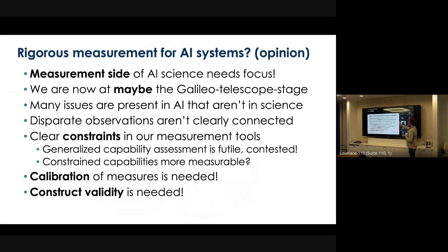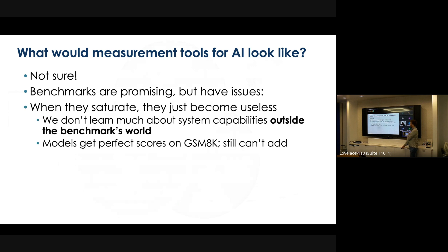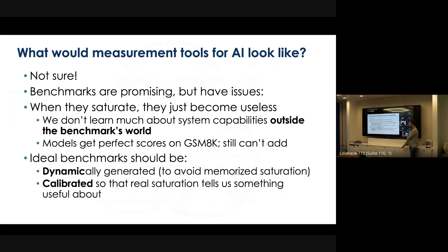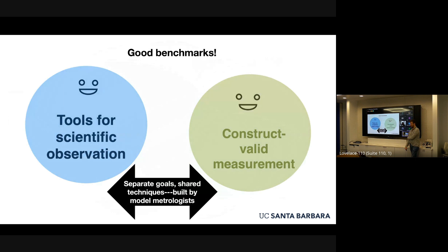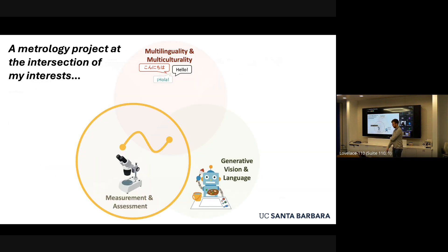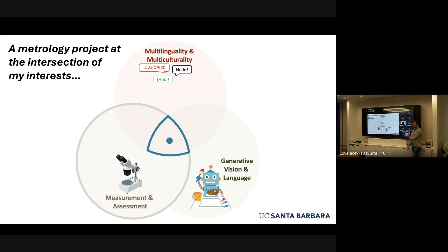The key things we want to see in a good measurement tool are a constrained nature calibrated to a specific construct-valid thing that we're looking to assess. The position of the paper is that we want to split between poor scientific tools and construct-invalid business measures — separating the goals, but having a unified focus on all of those. I want to move to the actual technical contribution, which is measurement techniques applied specifically to multilinguality in generative vision and language.